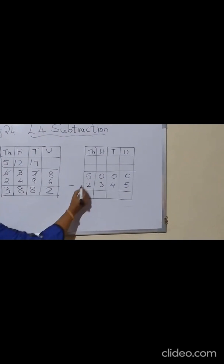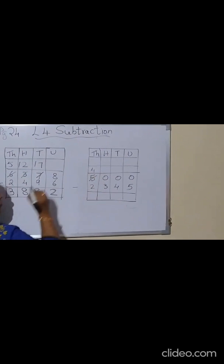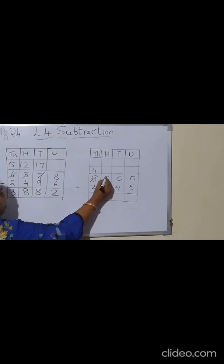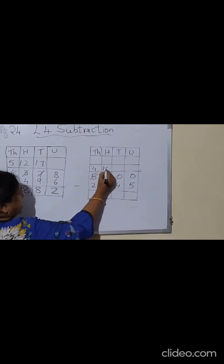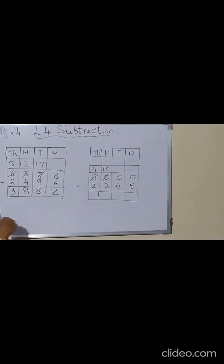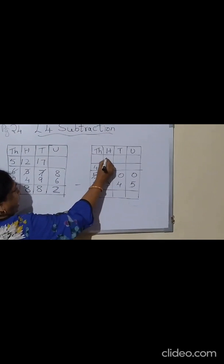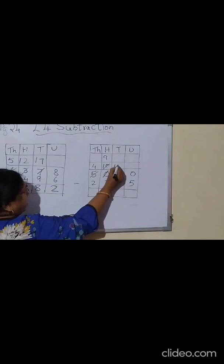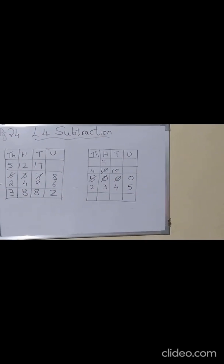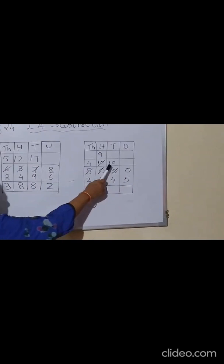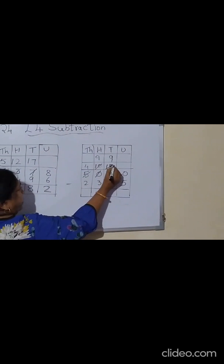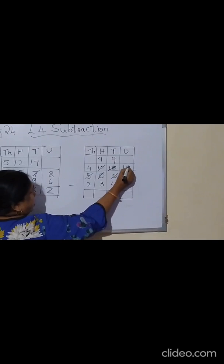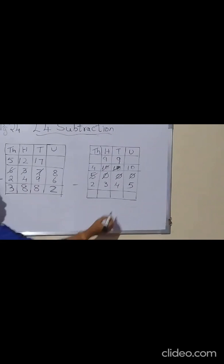So what we have to do is take 1 from this 5 — remove 1 from 5, it will become 4 — and give it to the hundreds place and write 10 there. Now from this 10 you remove 1, that will become 9, and give this 1 to the tens place — so it will become 10. Now from this 10 again you remove 1, it will become 9, and give that 1 to the units place — it will become 10.